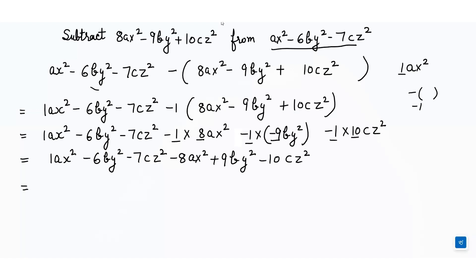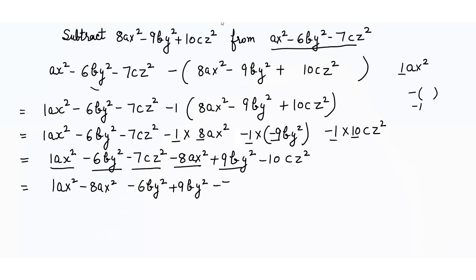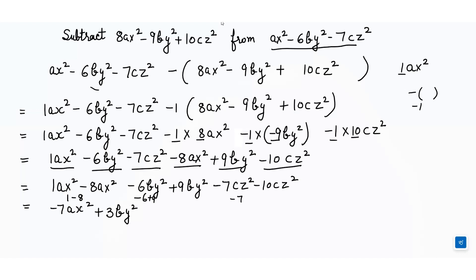Writing like terms together: 1ax² - 8ax², then -6by² + 9by², then -7cz² - 10cz². That gives: 1 - 8 = -7, so -7ax²; -6 + 9 = 3, so... then -7 - 10 = -17, so -17cz². The answer is -7ax² + 3by² - 17cz². For such helpful videos, do not forget to like, subscribe, share, and leave a comment. Thanks for watching.